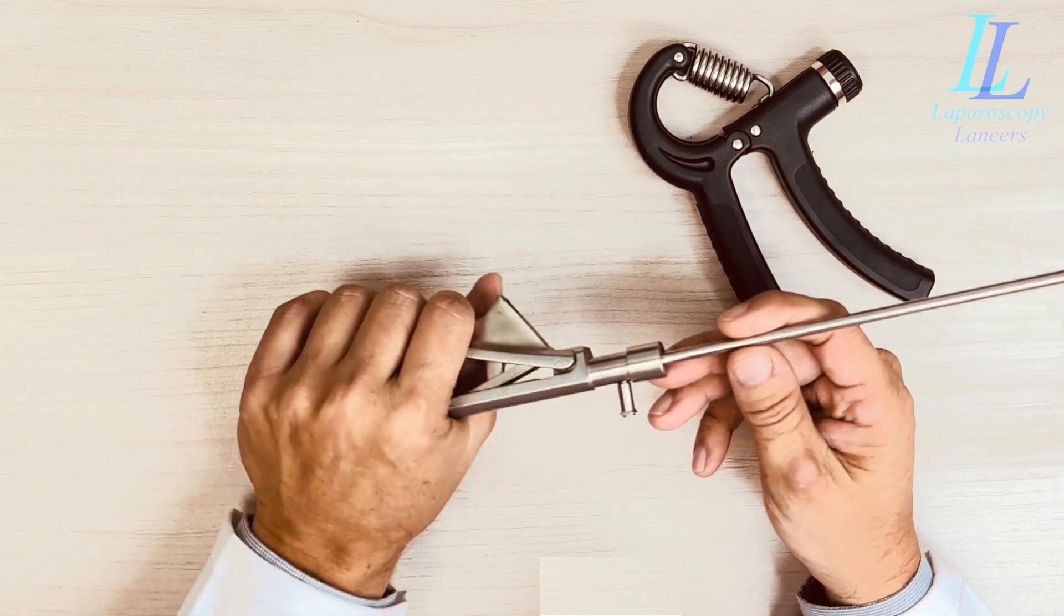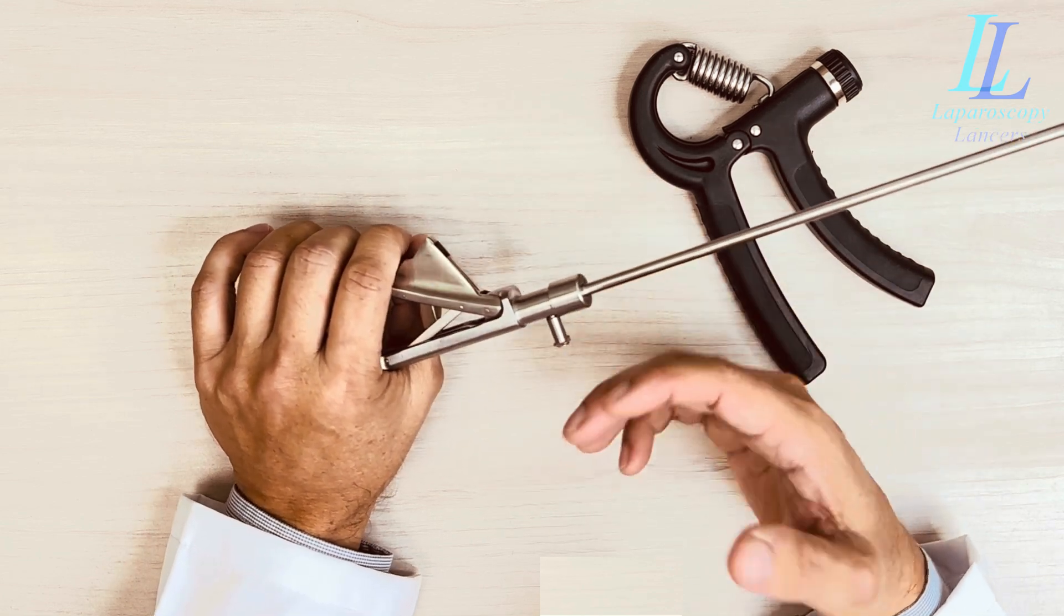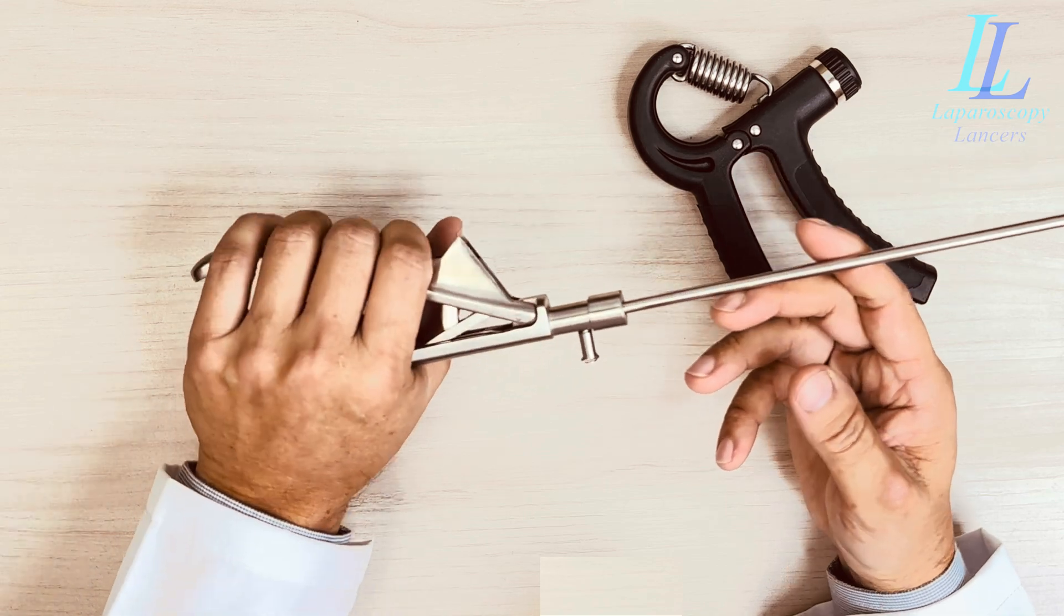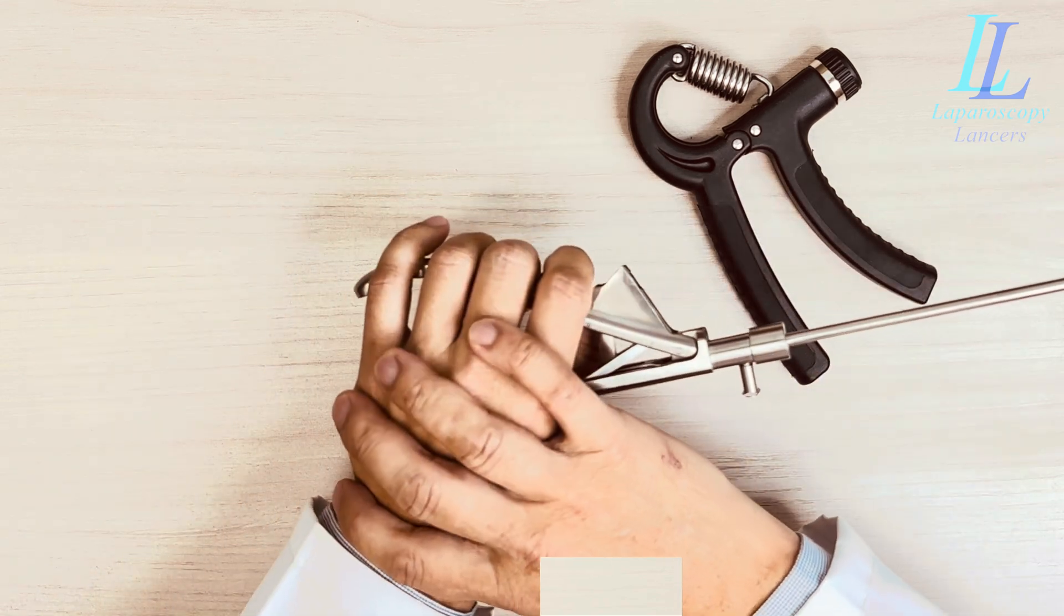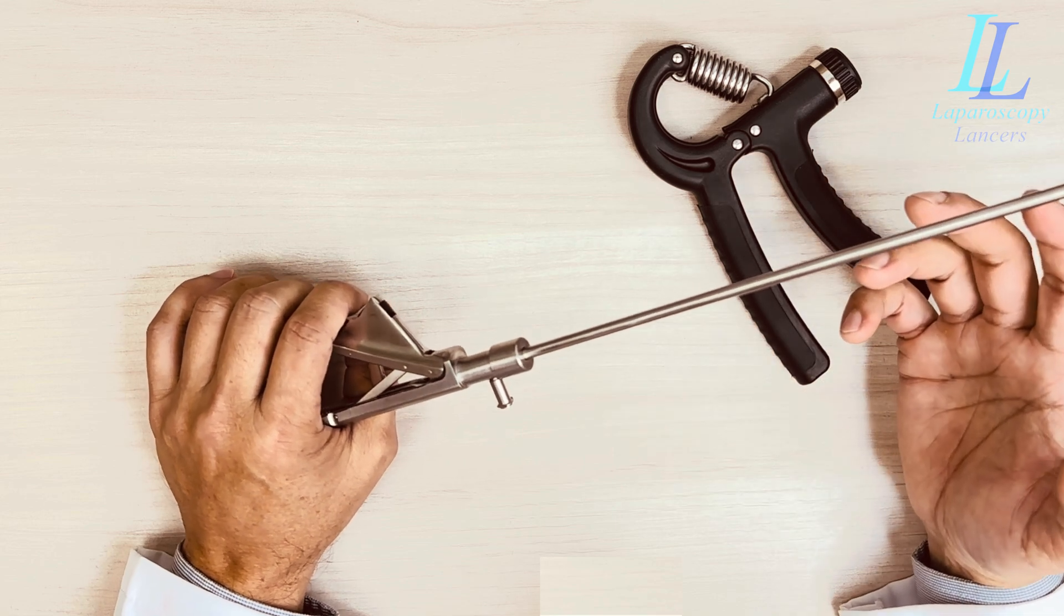This needle holder is generally used towards the end of surgery while closing the vault, and you're already tired after a half hour to 40 minutes ordeal of taking out the uterus. Your hand gets tired, starts cramping, and you get irritated. Once irritated, the whole operation theater scenario becomes tense.